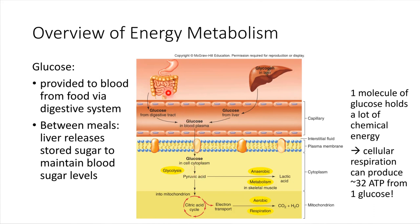That brings up the question: what about when there's not glucose present in the blood? We're not eating constantly, so what about between meals? In that case, this is where one of the jobs of the liver comes into play. The liver actually keeps a store of extra glucose, stores it in the form of glycogen, and when blood glucose levels start to drop too low, the liver can release some of that glucose back into the bloodstream. That helps keep glucose levels relatively constant and maintain homeostasis in the blood.